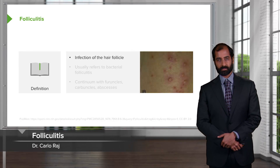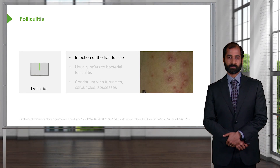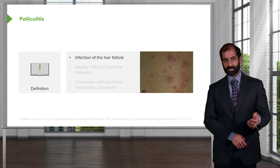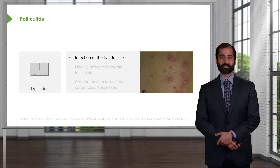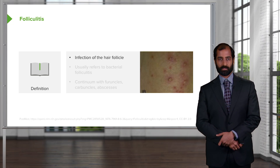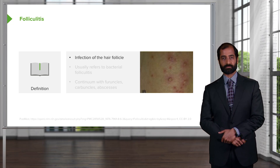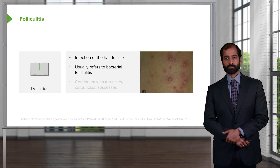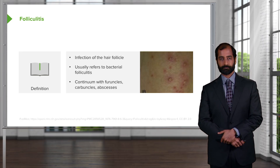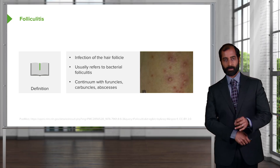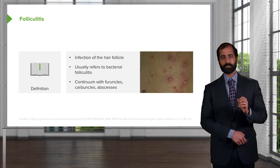We'll begin our topic by looking at folliculitis. I want to make sure that by the time we're completed with our discussion, that you're quite clear as to what it means to have a folliculitis, a furuncle, a carbuncle, an abscess, and so on. Think of a follicular unit — it houses your hair coming through the skin. Infection of the hair follicle is what folliculitis is. Usually it refers to bacterial folliculitis, and it's a continuum of furuncles, carbuncles, and abscesses.